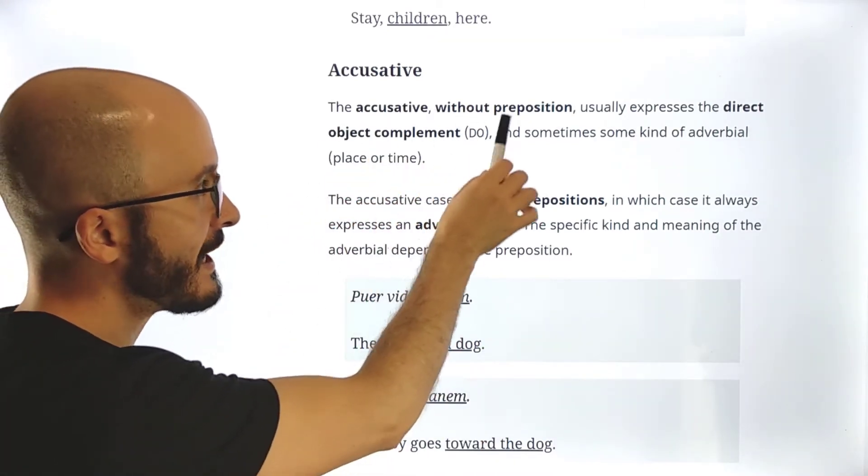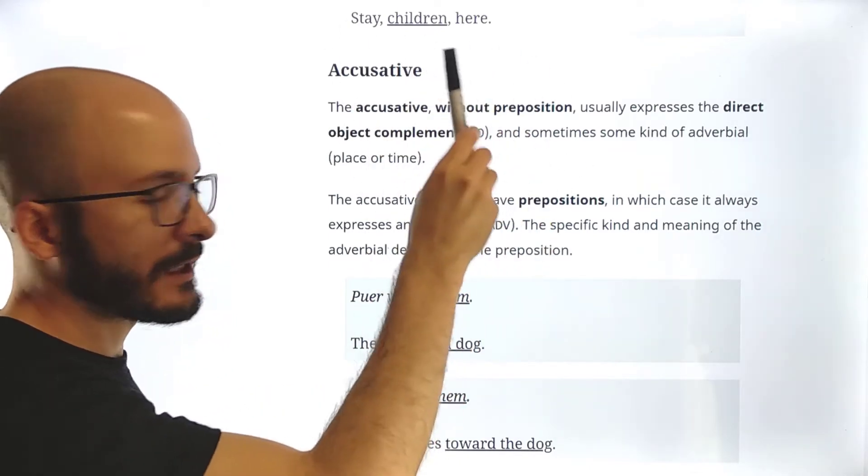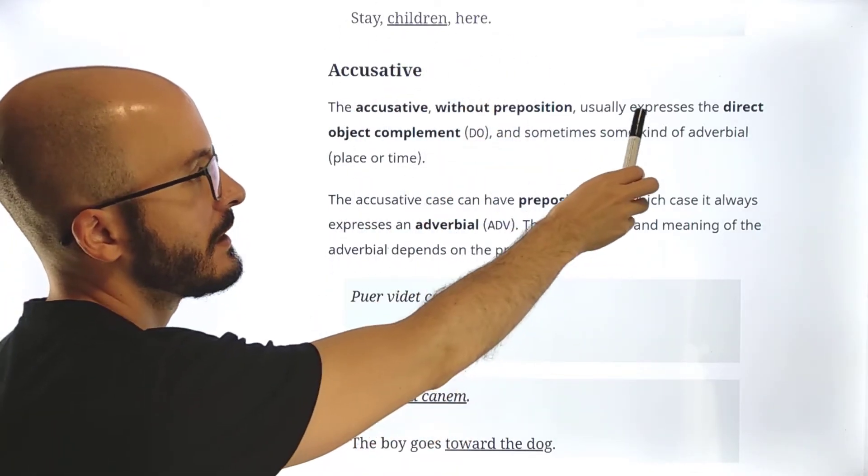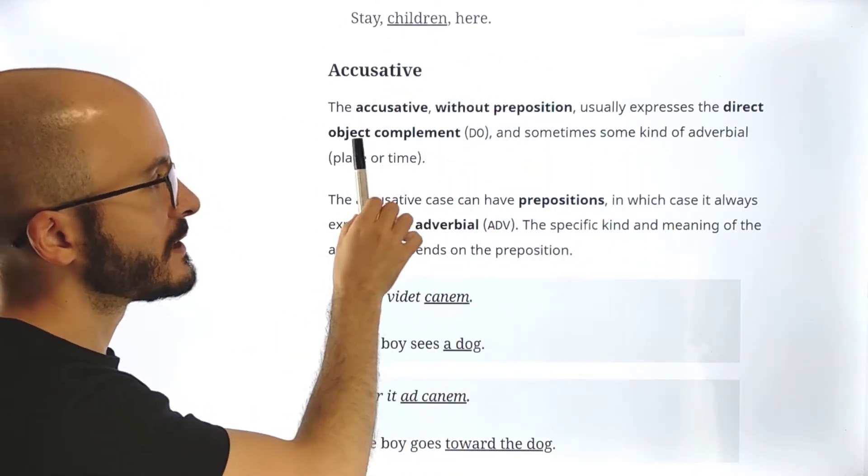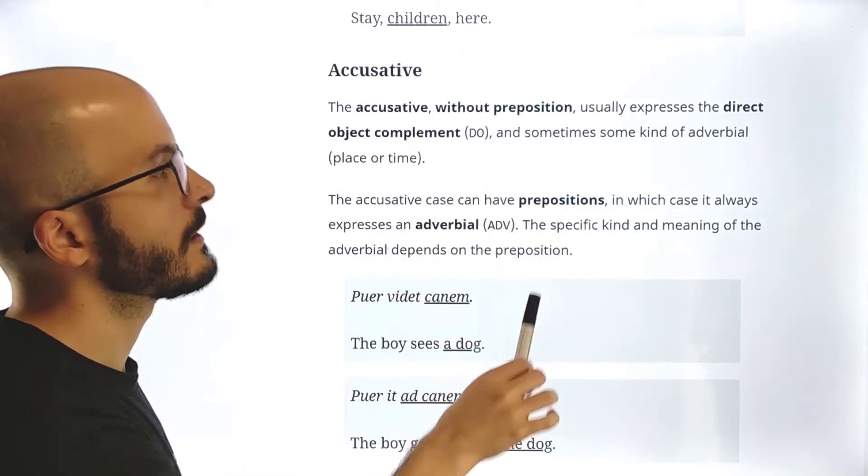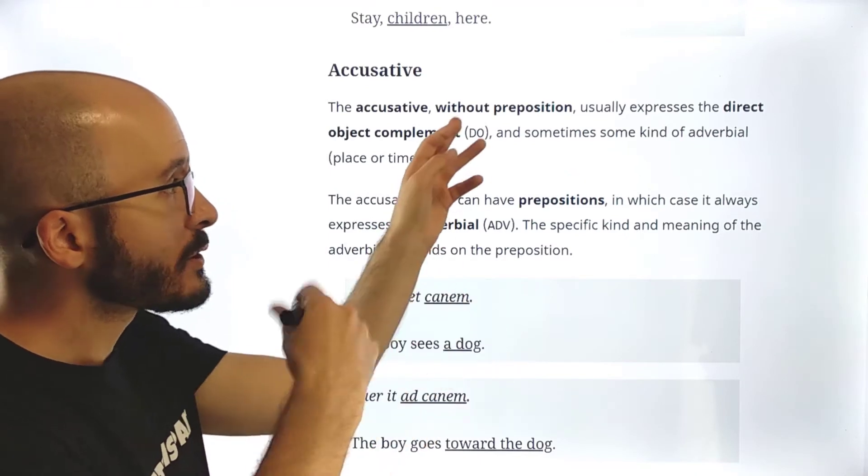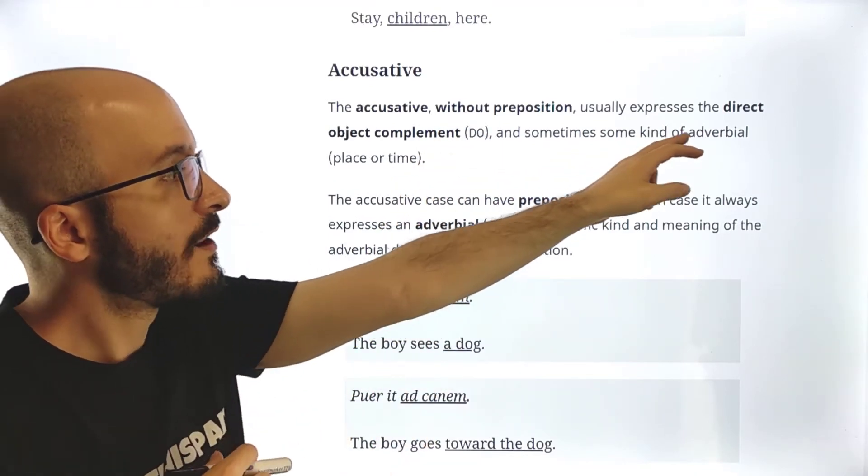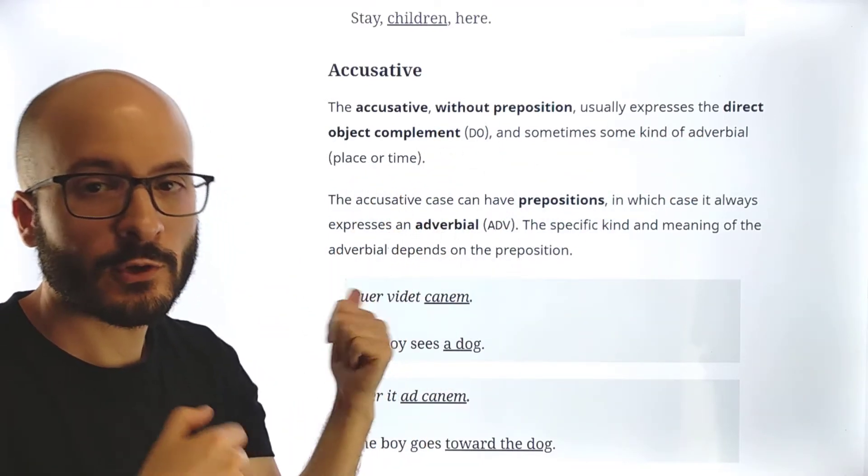So first, accusative without preposition, usually, like 90% of the times, expresses the direct object complement. The O, direct object. And then sometimes, also without preposition, some kind of adverbial, place or time.